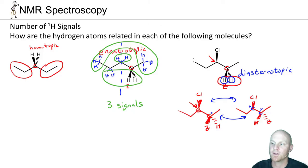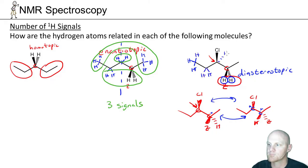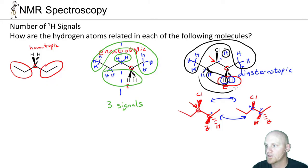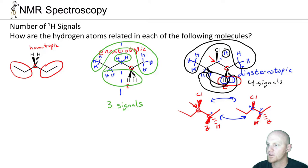Therefore these two hydrogens are diastereotopic and lead to different signals. Looking at all the hydrogens in general: due to symmetry, all six of these hydrogens are equivalent, then there's this one hydrogen, and then between the diastereotopic pair — the two wedged ones are equivalent to each other, and the two dashed ones are equivalent to each other. We end up with four signals in the HNMR spectrum — a super tricky example of two hydrogens being diastereotopic.